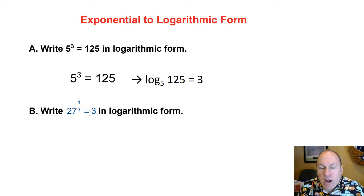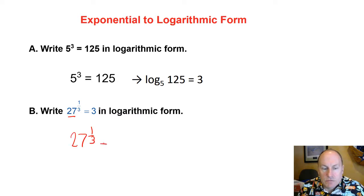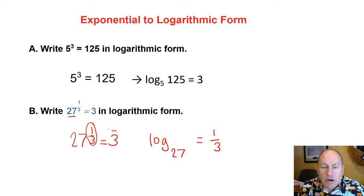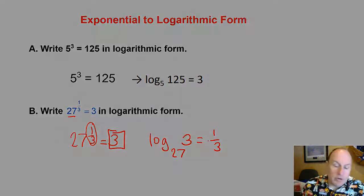Let's look at 27 to the 1/3 power equals 3 and rewrite that into logarithmic form. It becomes log base 27. The power 1/3 becomes the output of the logarithmic function, and the result 3 is the input. So 27 to the 1/3 power equals 3 is rewritten as log base 27 of 3 equals 1/3.